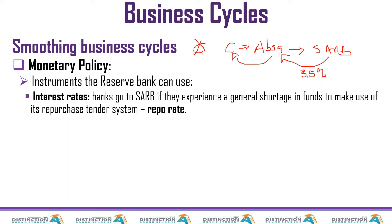At one point inflation was around 18%, and the repo rate was around 15% as a measure to curb inflation. So 3.5% of 1 million is 35,000 rand — ABSA must pay back 1 million plus 35,000 rand. The prime rate I'd estimate at around 7%, which means ABSA gets the 1 million and passes it to me, but I must pay back with 7% interest — that is 1 million plus 70,000 rand.